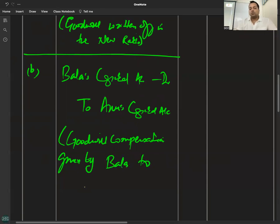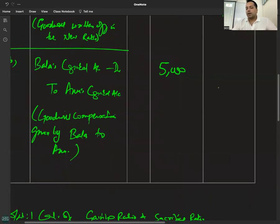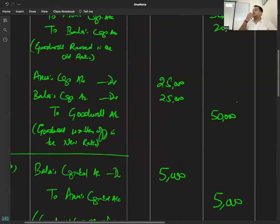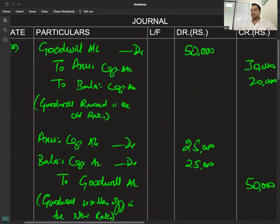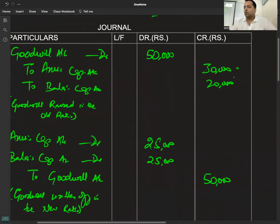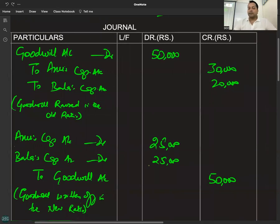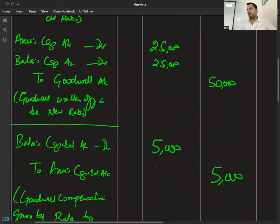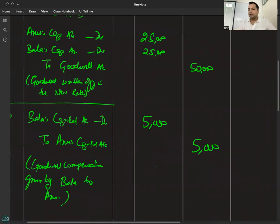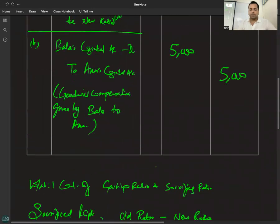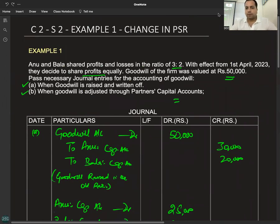Compensation ₹5,000 — Bala to Anu। ध्यान से देखना — दोनों methods का net impact same होगा। जब goodwill raise हुई तो Anu's capital credit हुआ, और जब goodwill write-off हुई तो Anu's capital debit हुआ ₹25,000। Net impact दोनों methods से same रहता है।